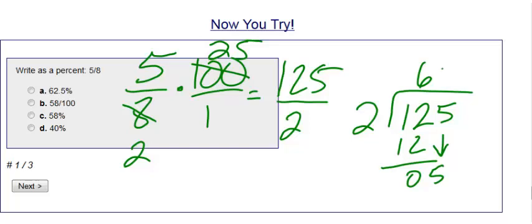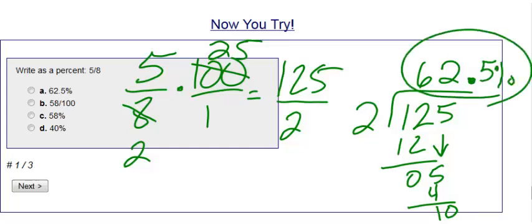2 goes into 5 two times with 1 left over. I have nothing left to bring down so I add my decimal, bring down my 0, and 2 goes into 10 five times evenly.